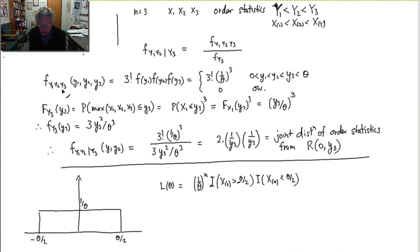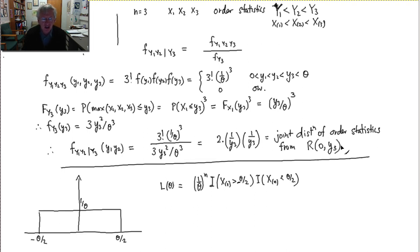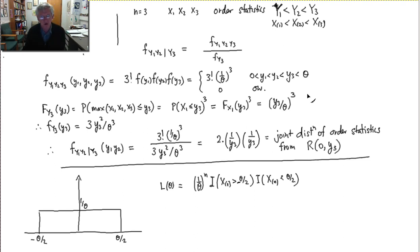If you believe this is the joint distribution for order statistics, this is the joint distribution of a sample of size 2 from uniform on 0 to y3 — exactly what we were suggesting. Conditioning on the maximum, the other two observations are uniformly distributed between 0 and the maximum. This is effectively a proof, although I don't expect you to follow all the details.